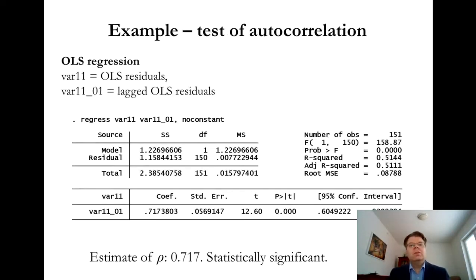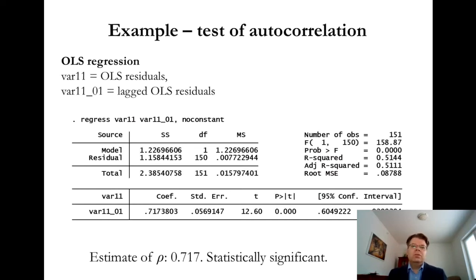I have done that using OLS regression in Stata, though it could equally be done in Excel. I took the OLS residual and explained it by the lagged value of the OLS residual, excluding the constant term. The coefficient is positive, indicating positive autocorrelation consistent with the graphical illustration. The estimated autocorrelation coefficient is 0.717 and is significantly different from zero. So we find that according to the AR1 model, there is indeed significant autocorrelation present in the regression residuals.